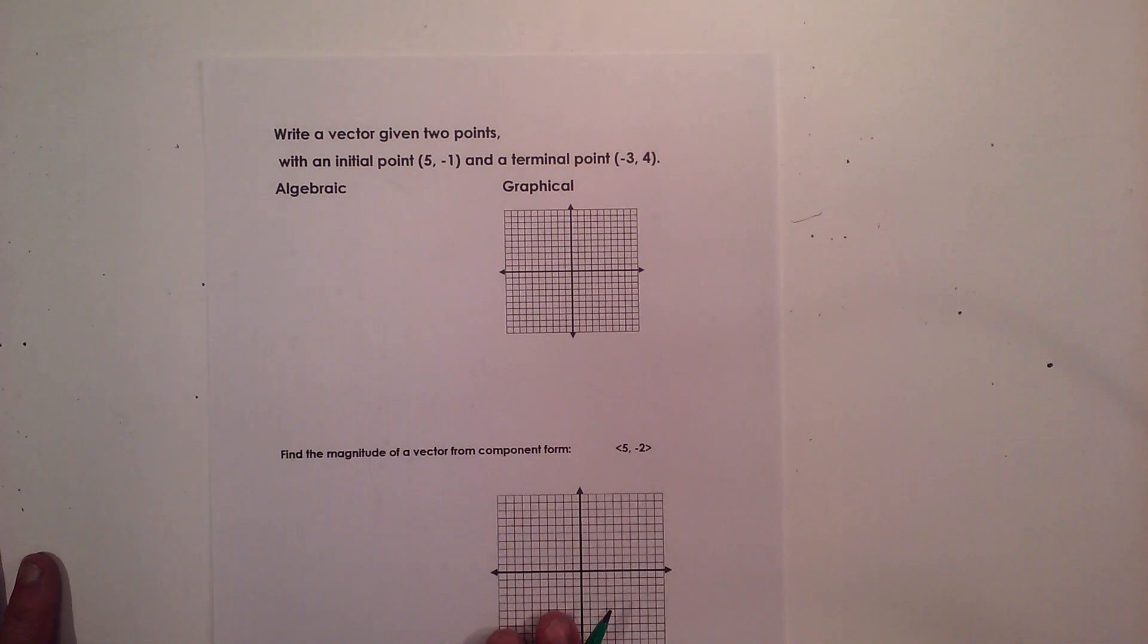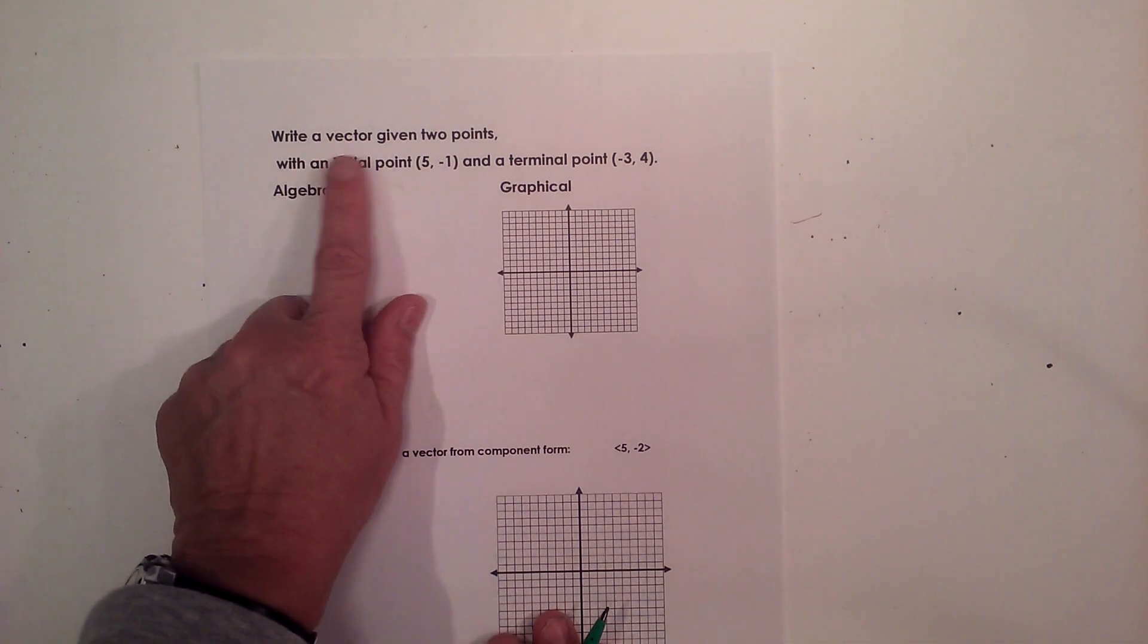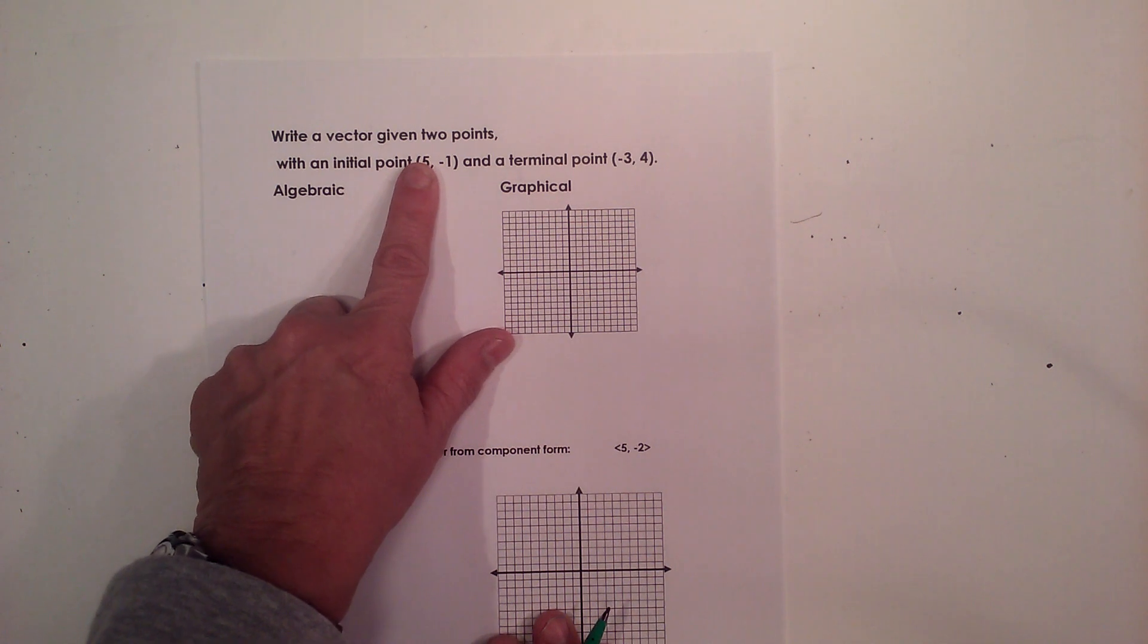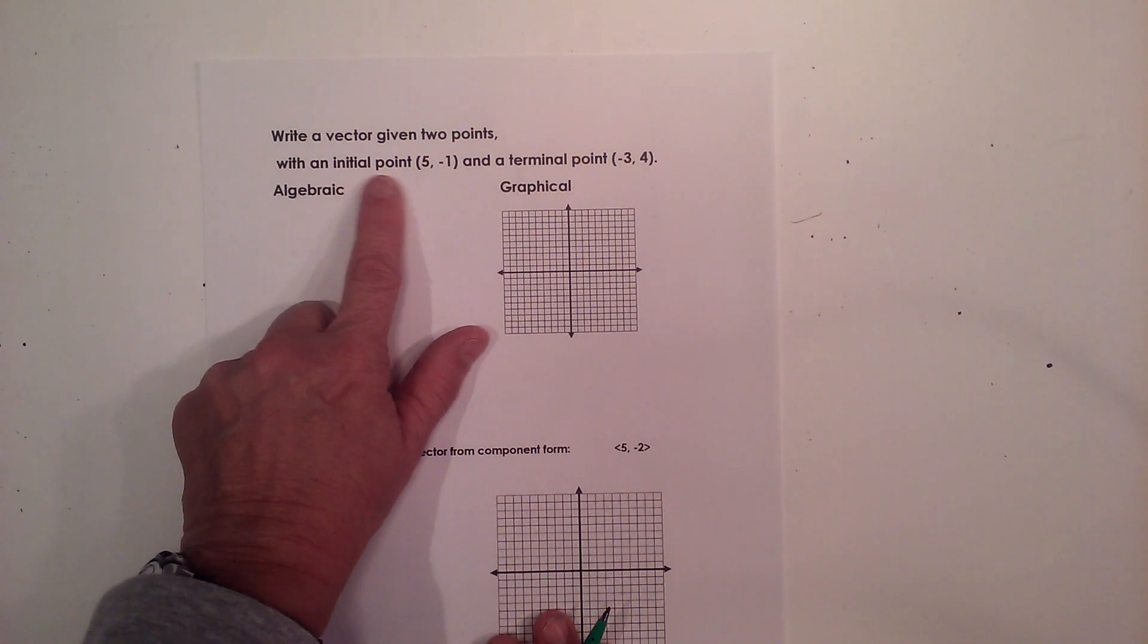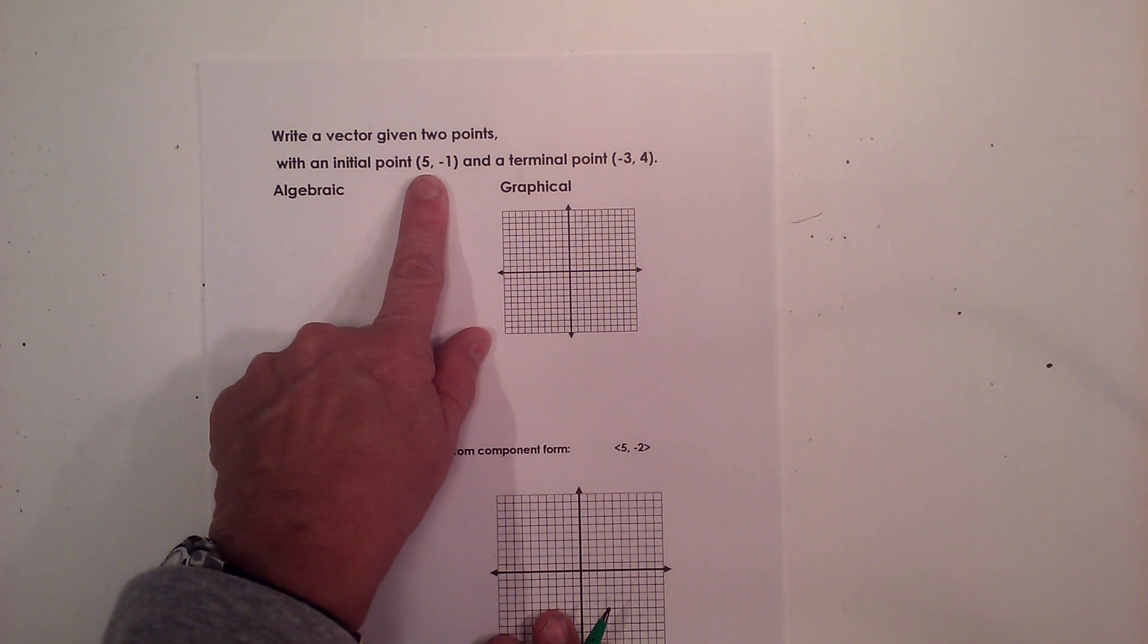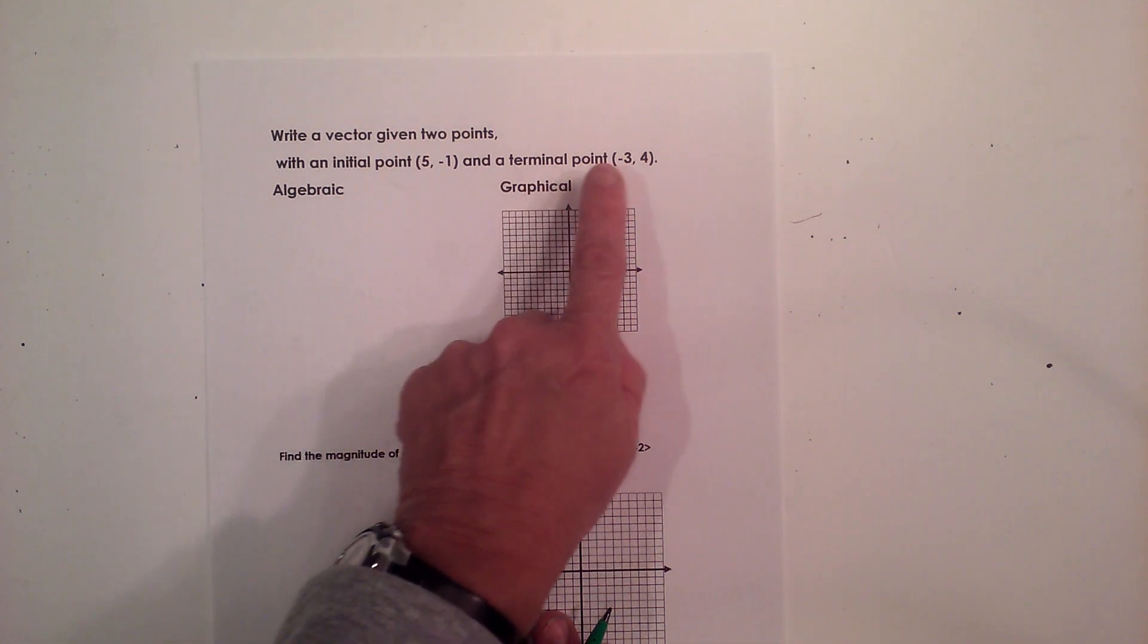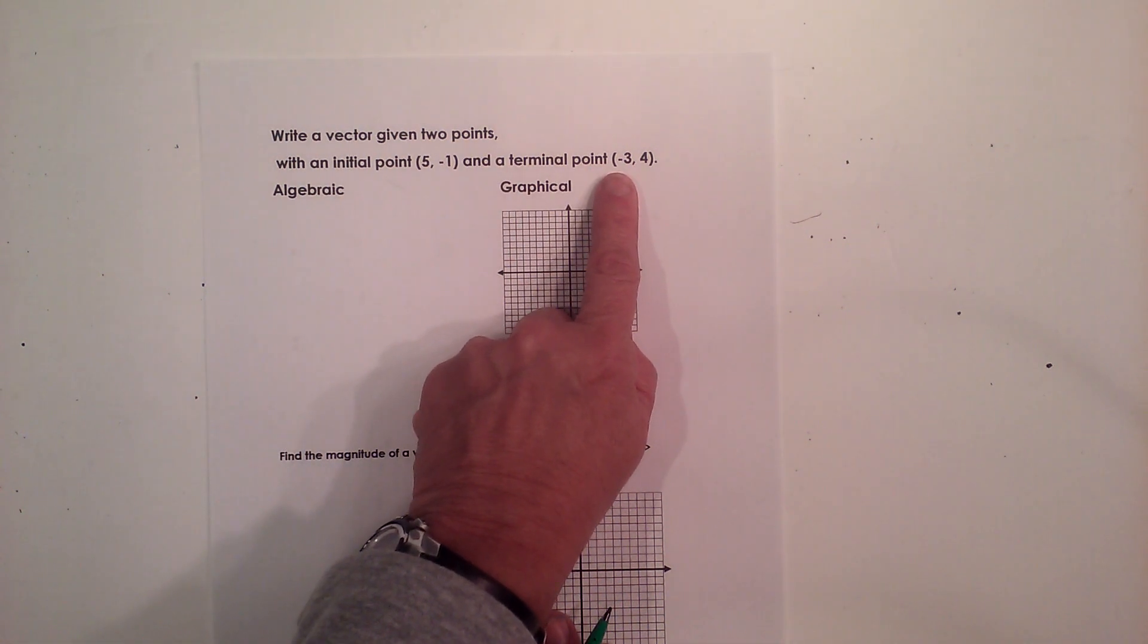Hey, welcome to Moo Moo Math. Today we're going to learn how to write a vector given two points. So we have an initial point at (5, -1) and a terminal point at (-3, 4).